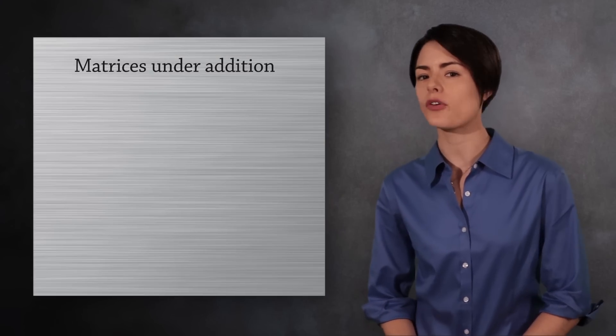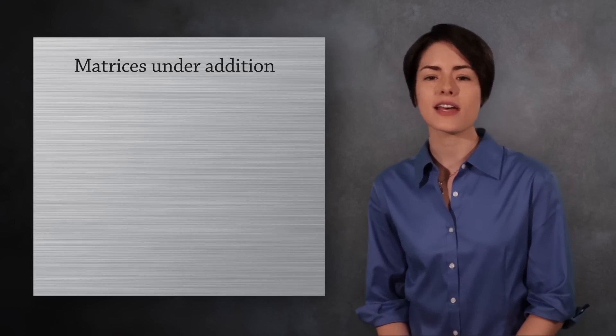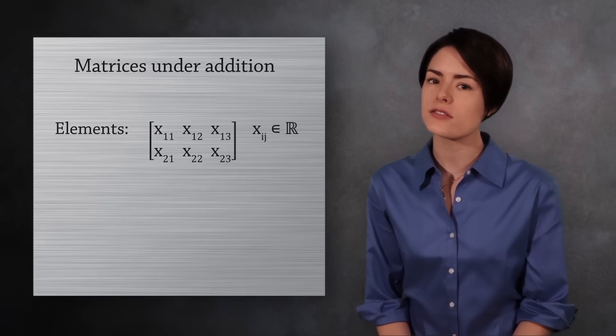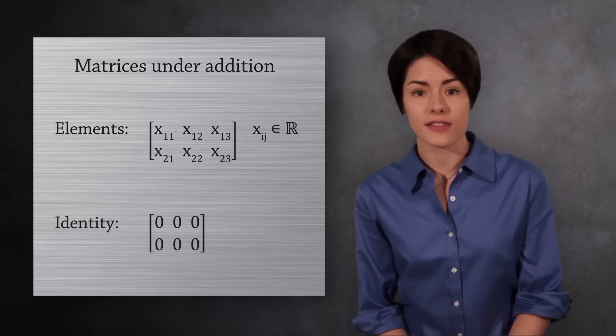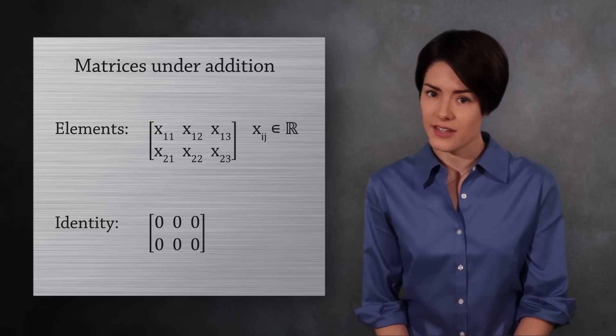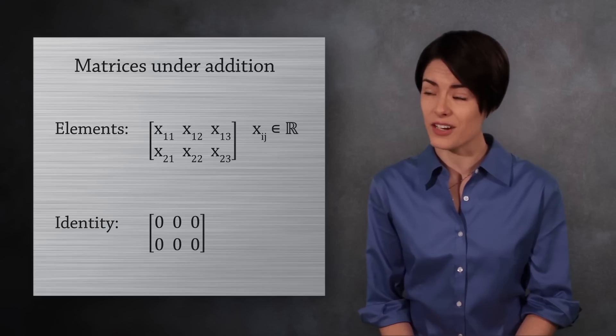There are two ways to make a group from matrices, using addition or multiplication. For example, the two by three matrices with real numbers form a group under addition. The identity element in this group is the zero matrix. And while this is an infinite group, it is an abelian group. We're after infinite groups that are non-abelian.